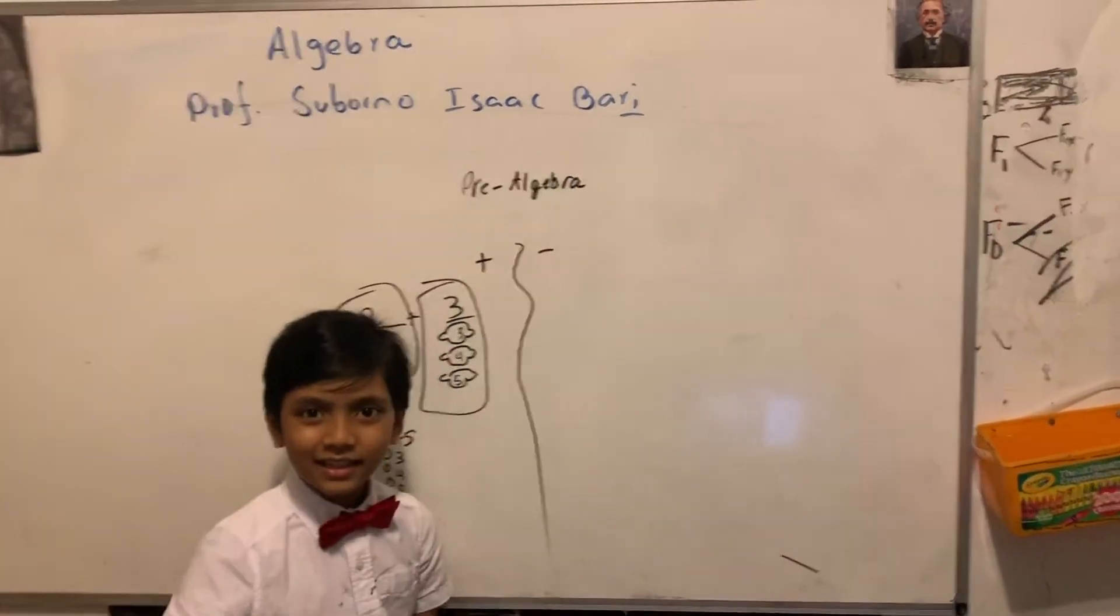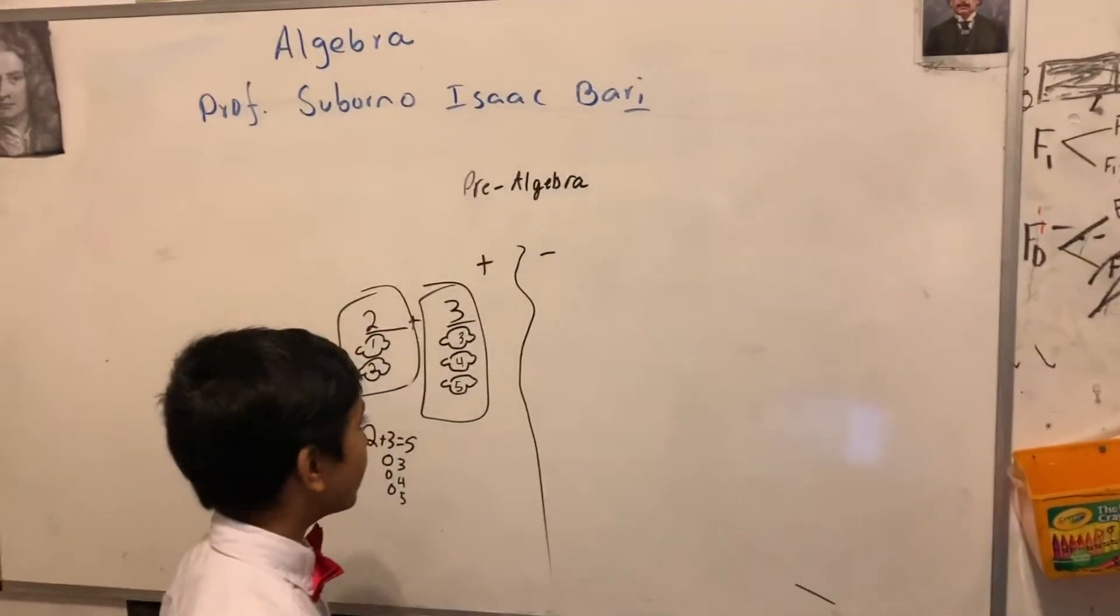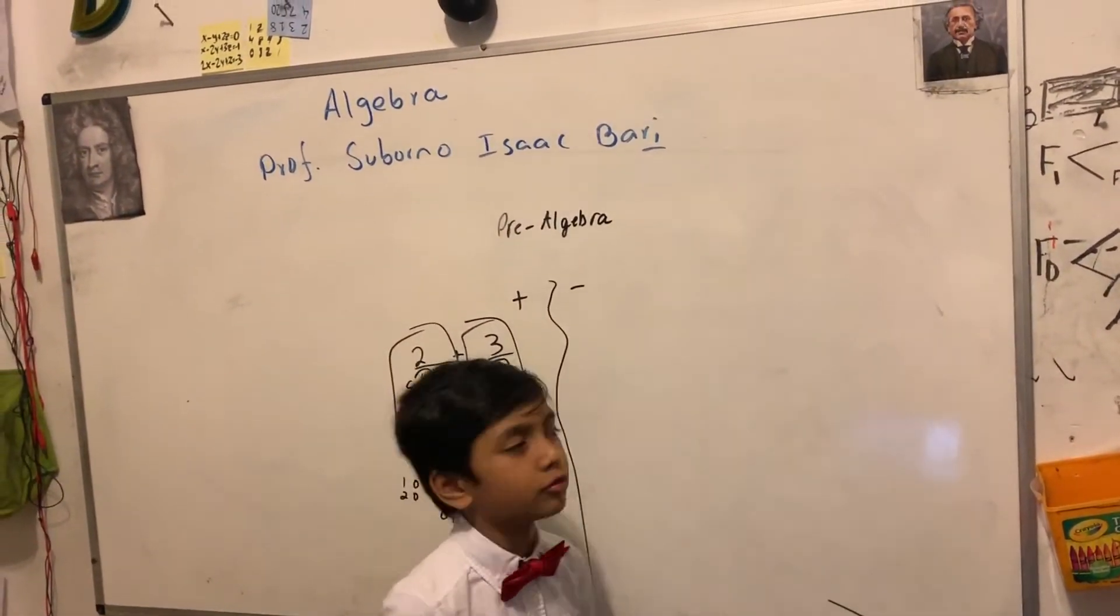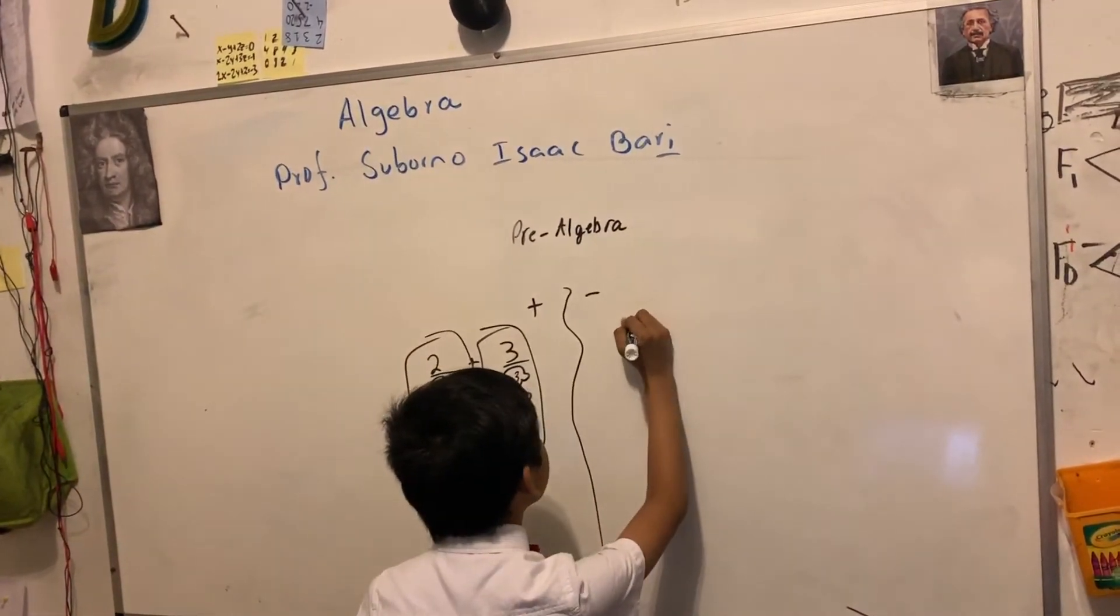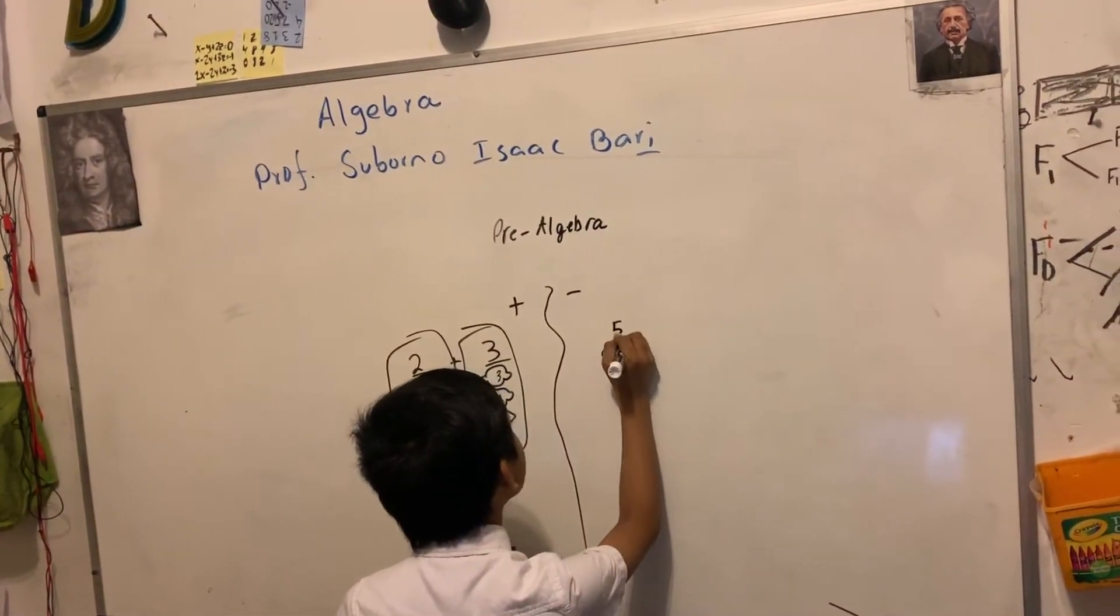Now, subtraction is like anti-addition, taking something away instead of joining two groups. So, let's say we have our five lemons.